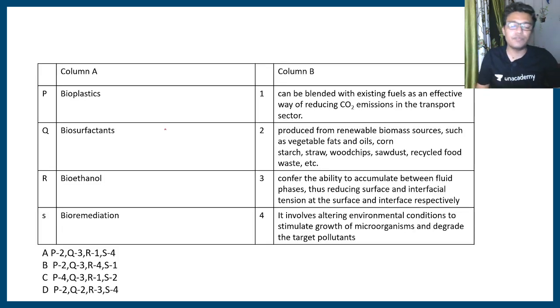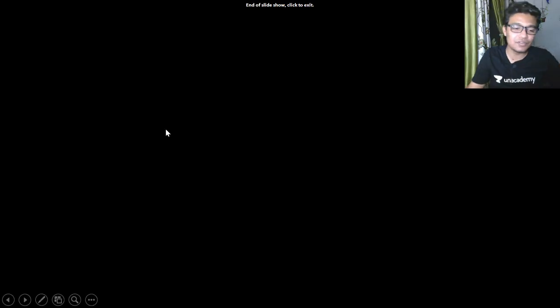Okay, last question is for you and these kinds of questions are very common. Here there are few terms which you need to understand and in column B there is some related information about those terms. You need to match these: bioplastics, biosurfactants, bioethanol, bioremediation with the options in column B. In the comment section let me know what would be the correct option according to you and at the end of the day I'll reveal the correct answer. If you like this video, give it a quick thumbs up. Don't forget to like, share, and subscribe. Thank you.